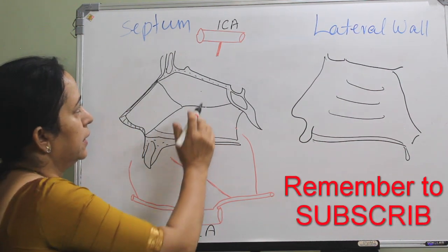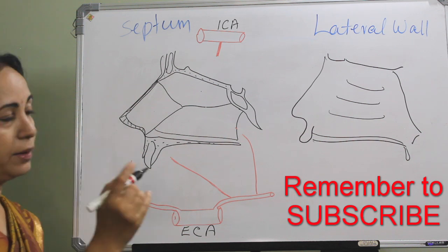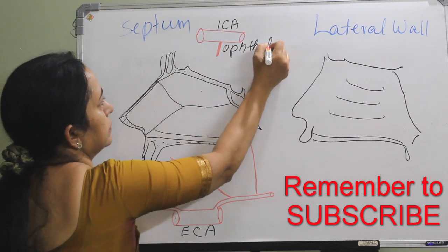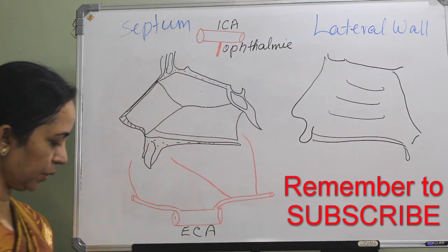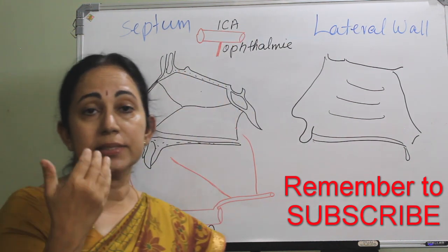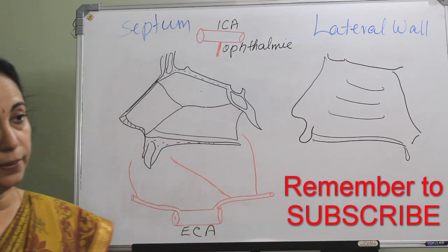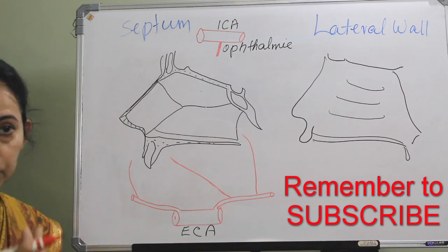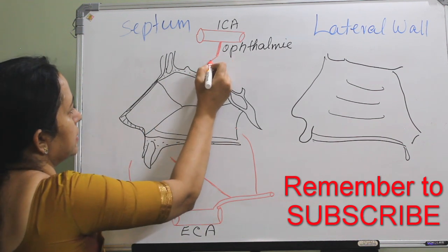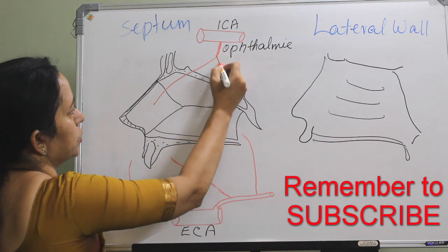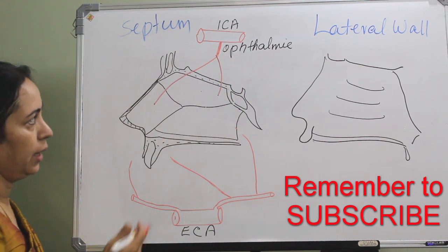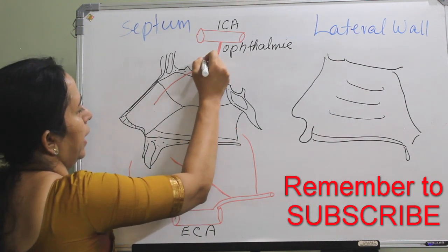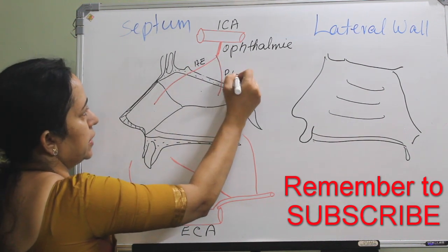The blood supply of the septum — from the internal carotid artery comes the ophthalmic artery. And from the ophthalmic artery there is the anterior and posterior ethmoid artery. Think that in the roof there is an ethmoid bone, so from the ophthalmic artery comes the anterior ethmoid and also the posterior ethmoid.